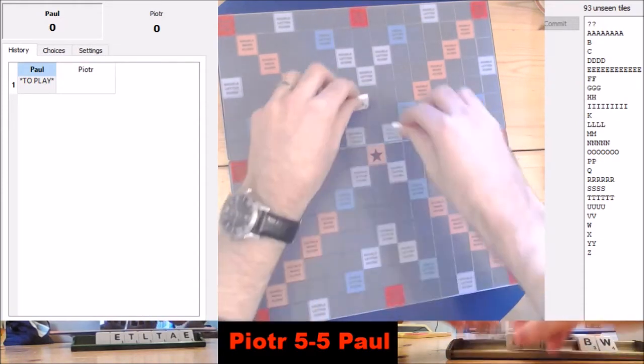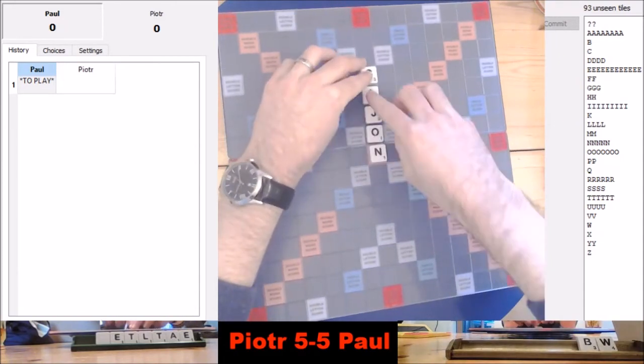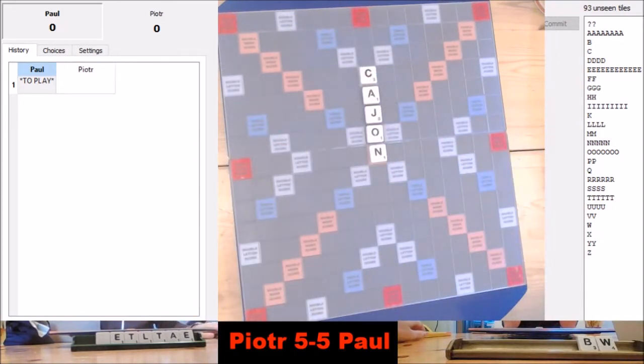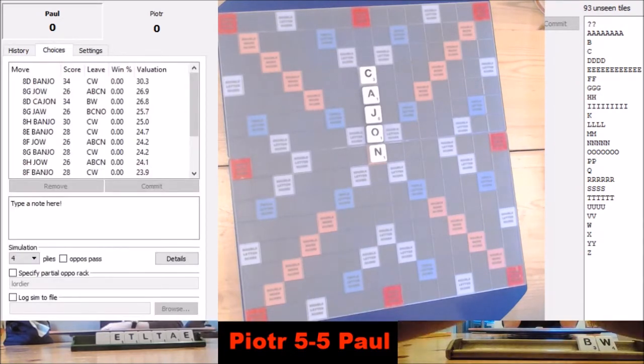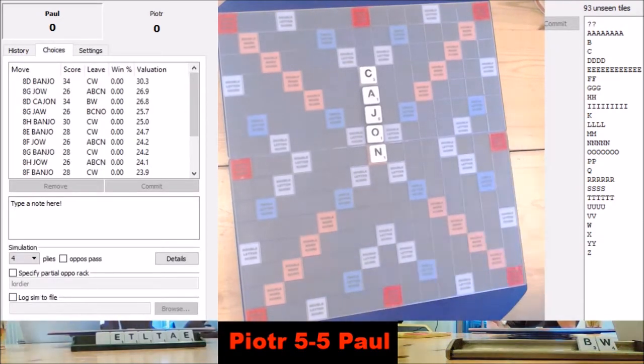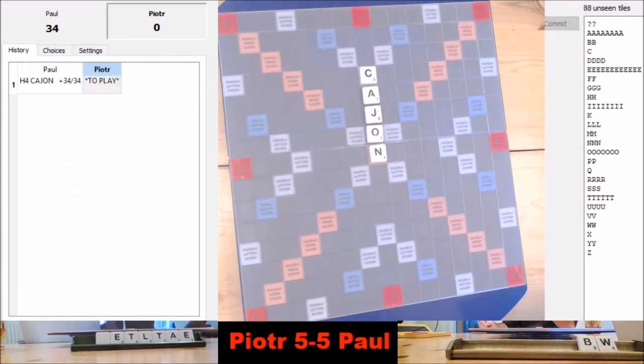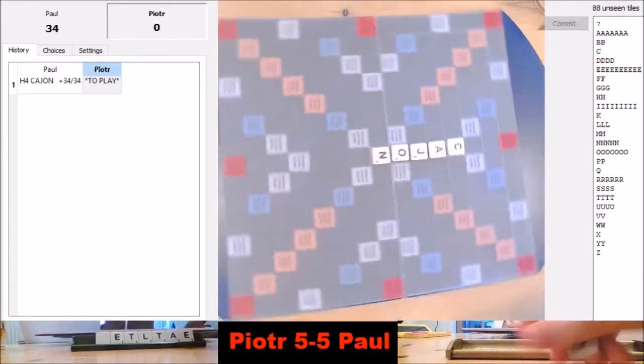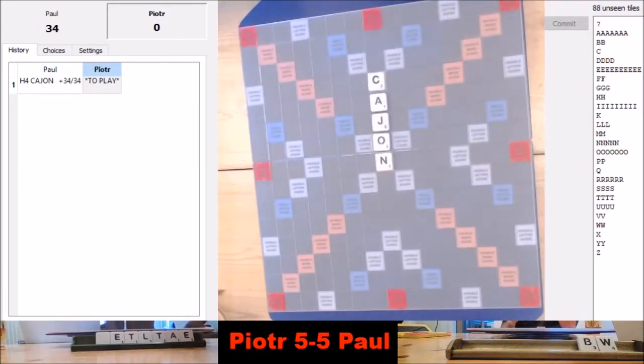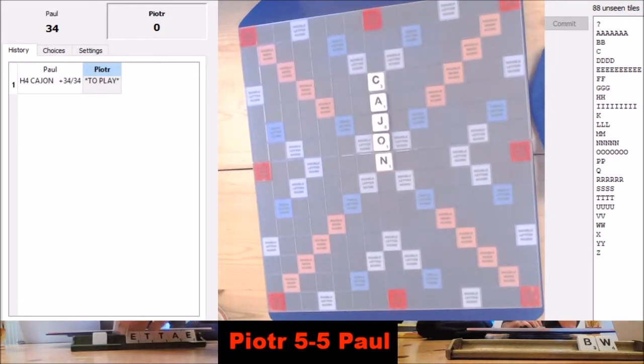Okay, so he's going for Cajun. Very cool. Maybe he's trying to be a bit more aggressive, putting a vowel there. Maybe he just hasn't seen Banjo or Banco. All this means is that Piotr looking at that A for a double-double and it doesn't exist.